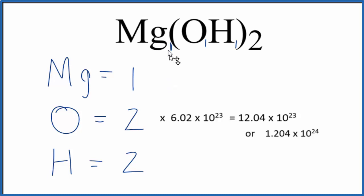If we wanted to know how many magnesium atoms, it'd be 1 times Avogadro's number, which would just be 6.02 times 10 to the 23rd magnesium atoms in one mole of magnesium hydroxide.